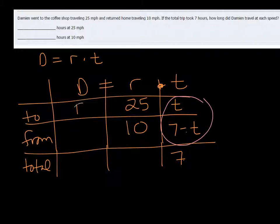Now the distance, D is going to be the same because he's going to a coffee shop and back, they're both the same. So that gives us our equations.